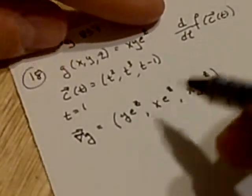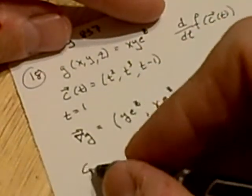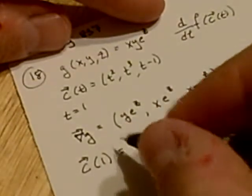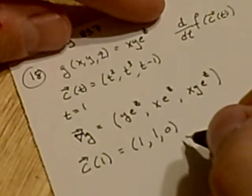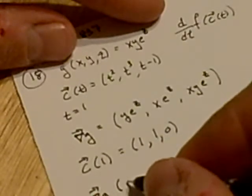Now, we can find this gradient at the point c of 1, if we know what the point is. So at t equals 1, we'll have 1, 1, 0. So we can evaluate the gradient at that point: 1, 1, 0.